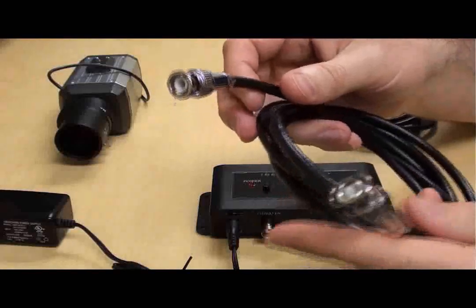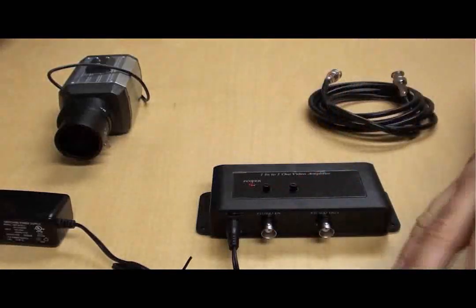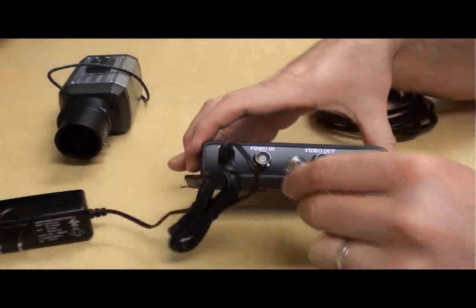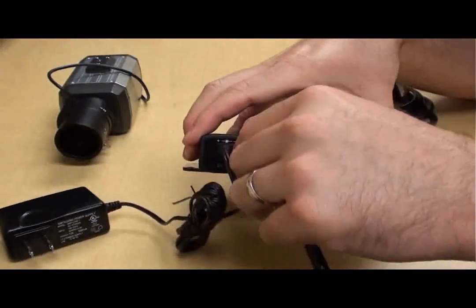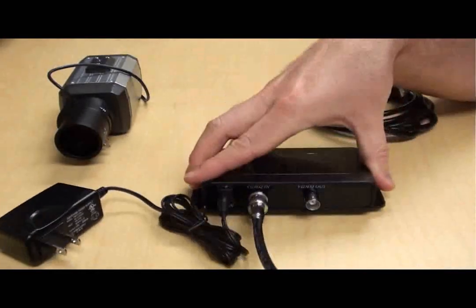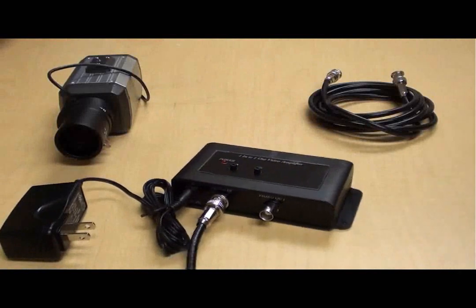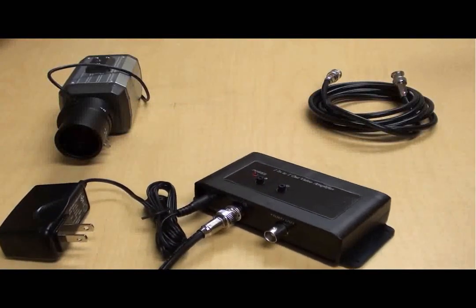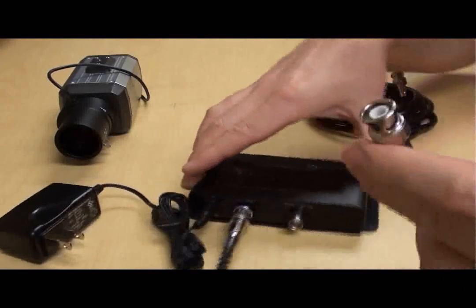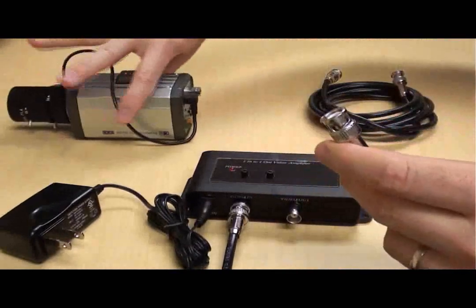RG59 coax cable is used to make a connection to the video input of the amplifier. The other end of the coax cable is connected to the video output of the box CCTV camera seen here.